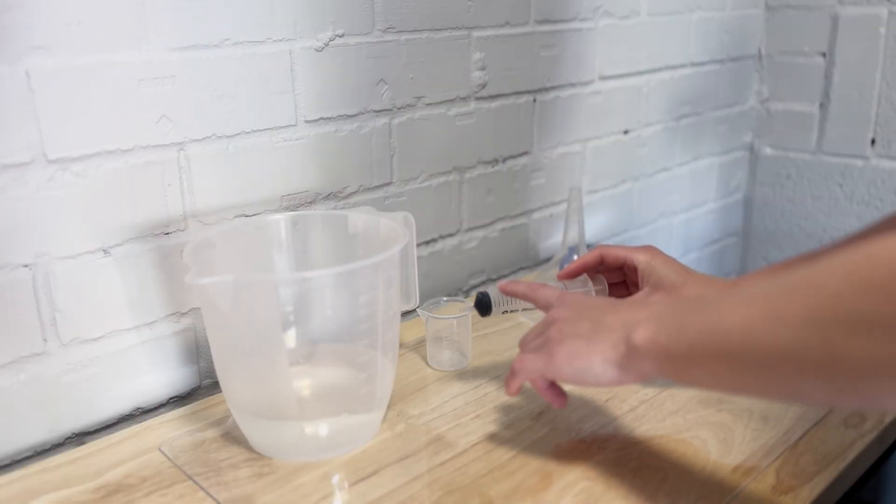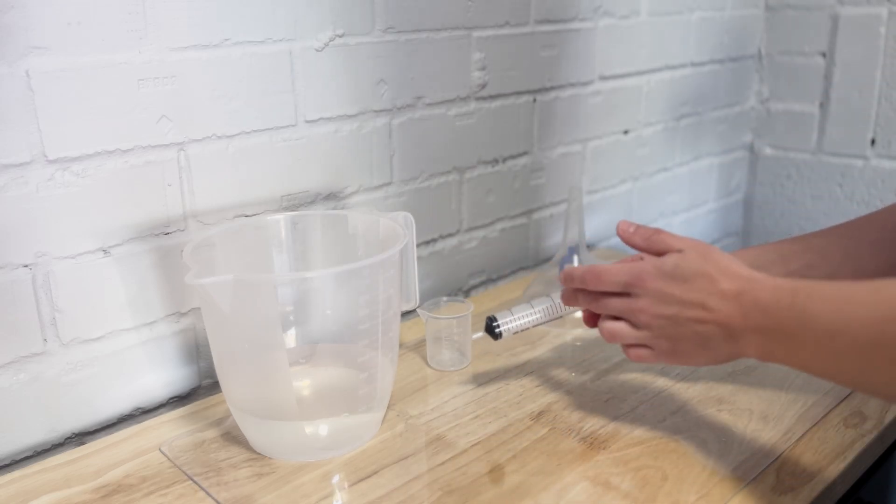I've also got this syringe which is great if I'm diluting chemicals where I really don't need that much product. So this is a 20ml syringe and it just allows me to be a bit more precise when diluting chemicals where I'm using a really small amount.